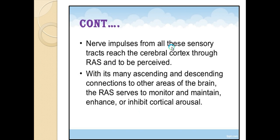Nerve impulses from all sensory tracks — skin, tongue, eyes, and others — reach the cerebral cortex through the RAS to be perceived. With its many ascending and descending connections to areas of the brain, the RAS serves to monitor, maintain, and inhibit cortical arousal.